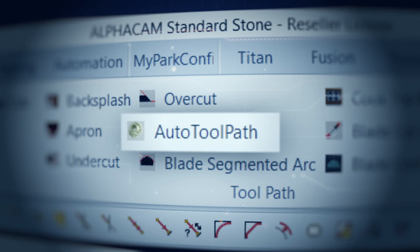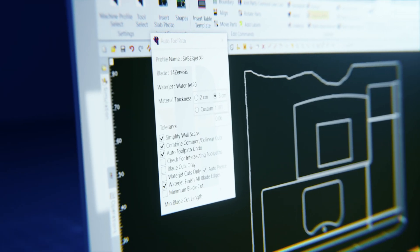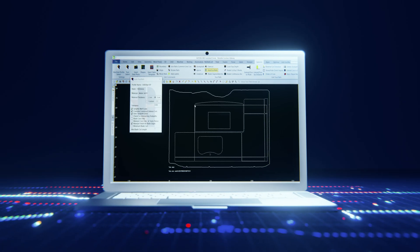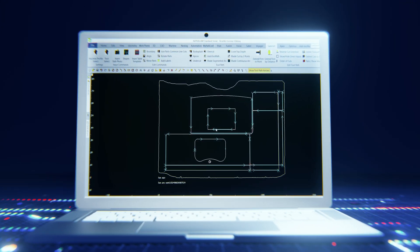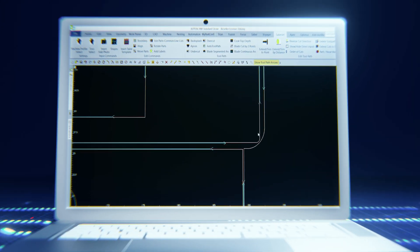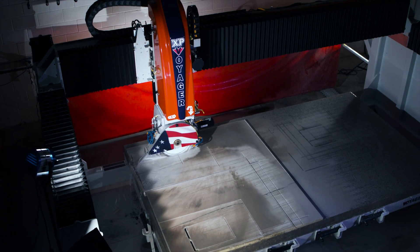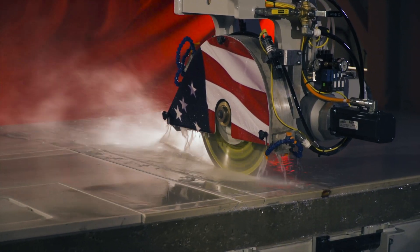Like the Auto Toolpath button, the single greatest time-saver for programming your CNC saw or sawjet. It applies tool directions and types, eliminates overcuts, takes care of wall scribes, and optimizes your speeds and feeds with just the click of a button.